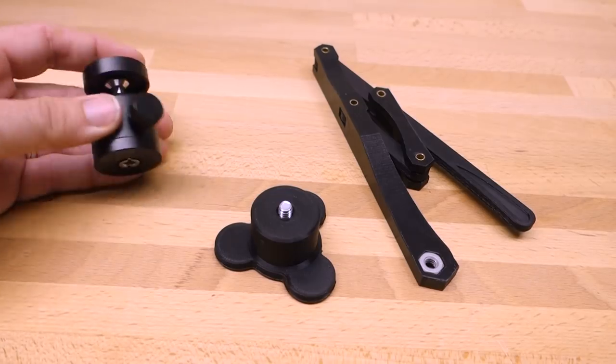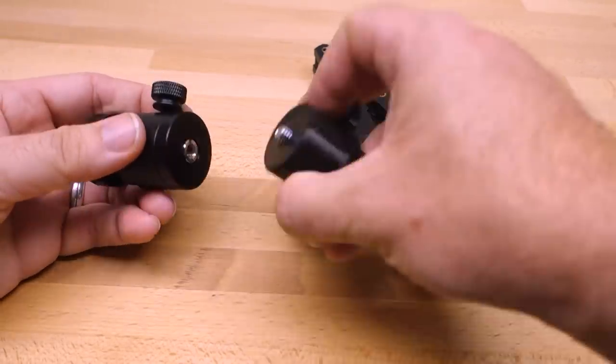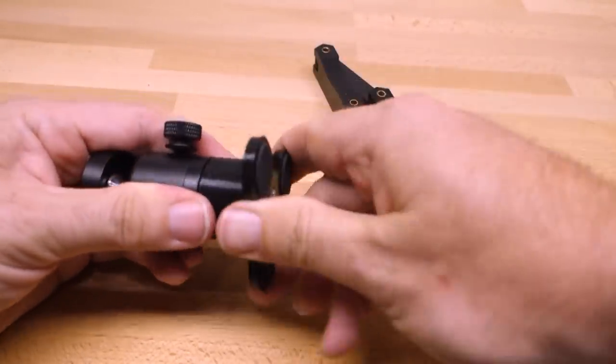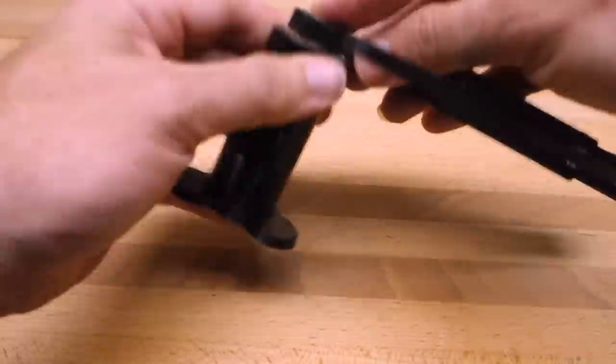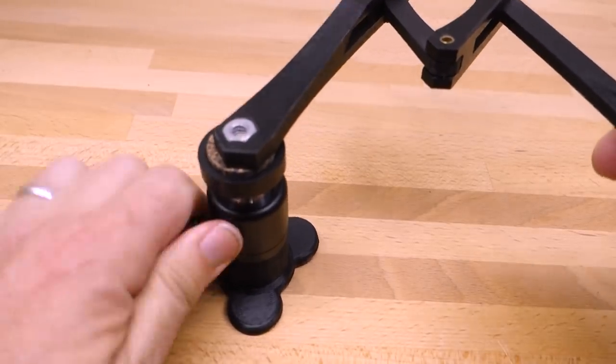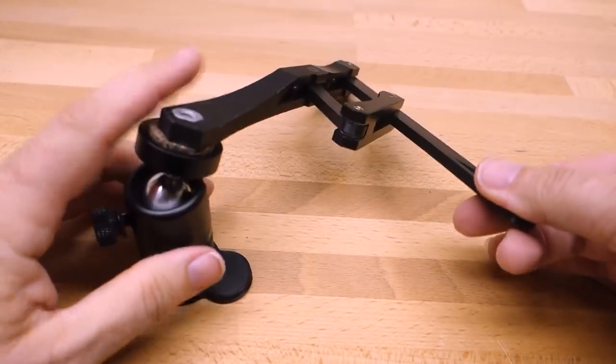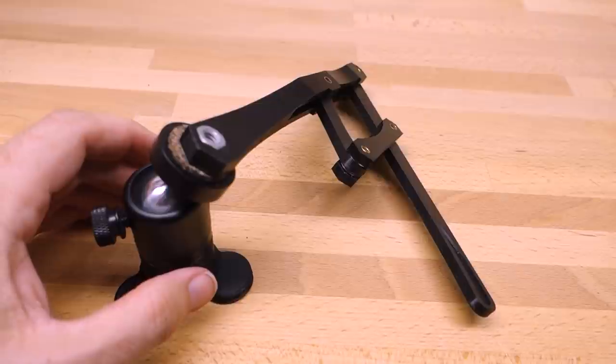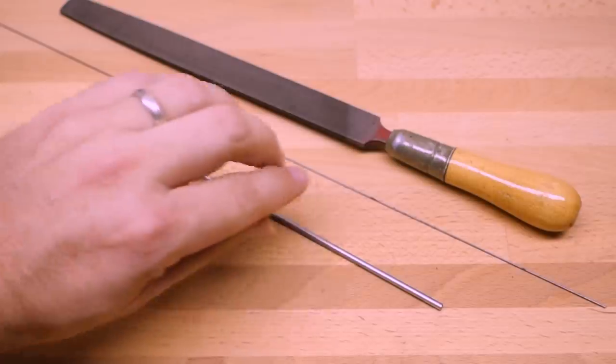Now all we have to do is mount the ball head and attach the pantograph. Now that we've built the pantograph, let's build a basic probe for it.